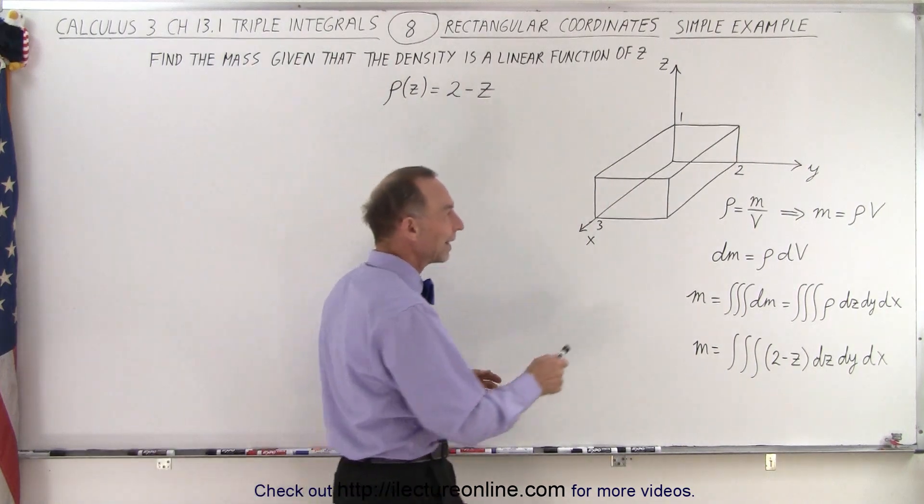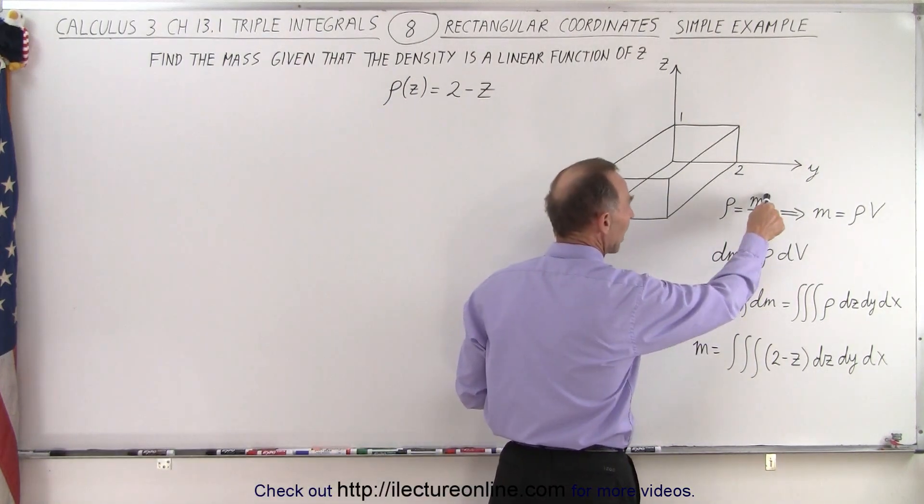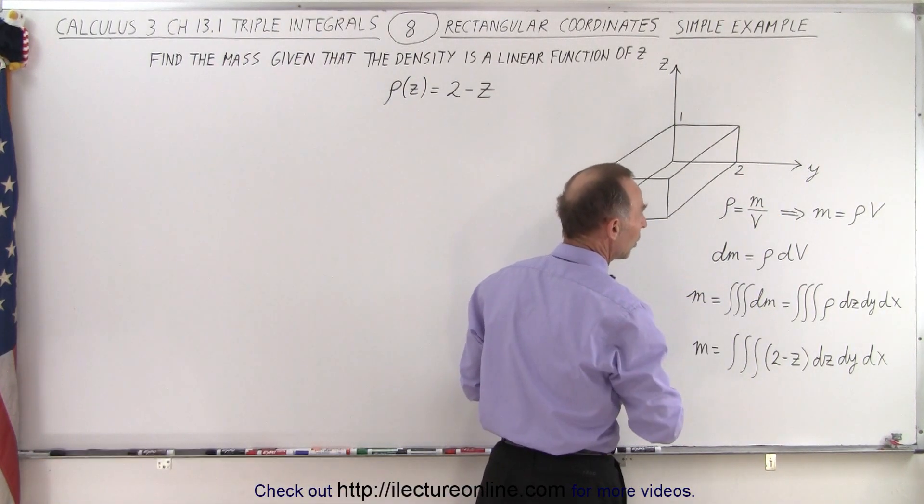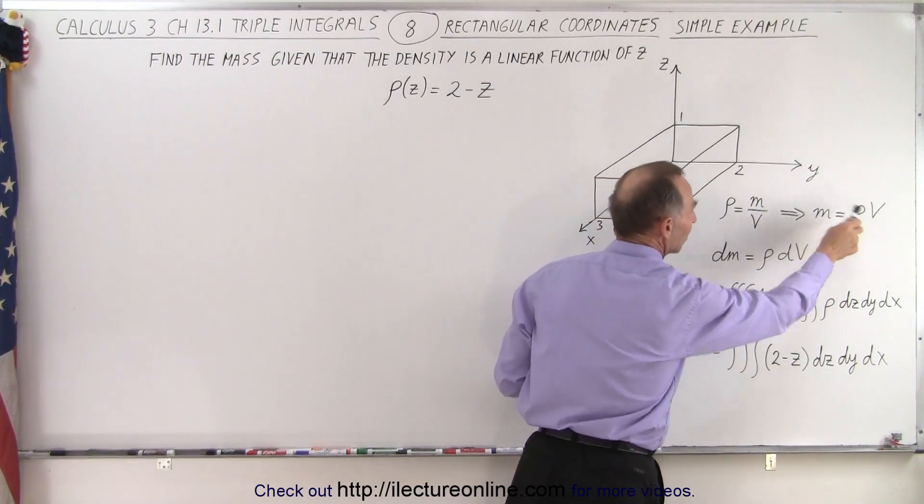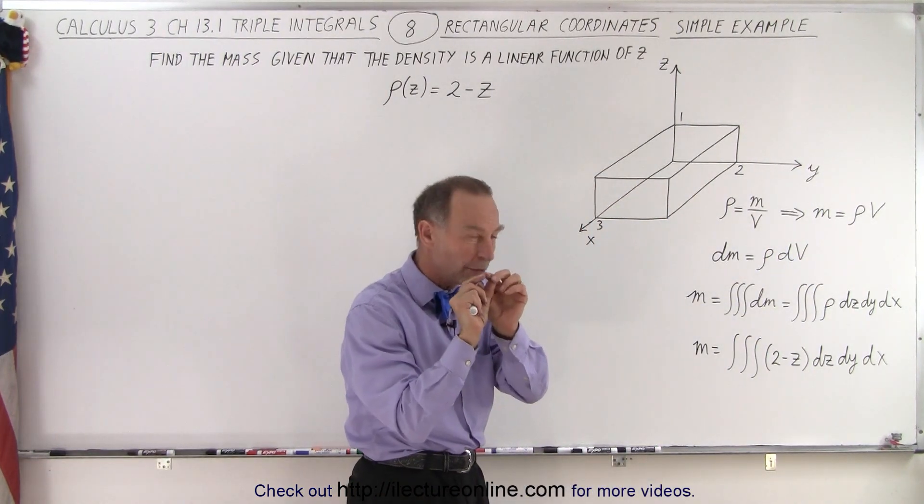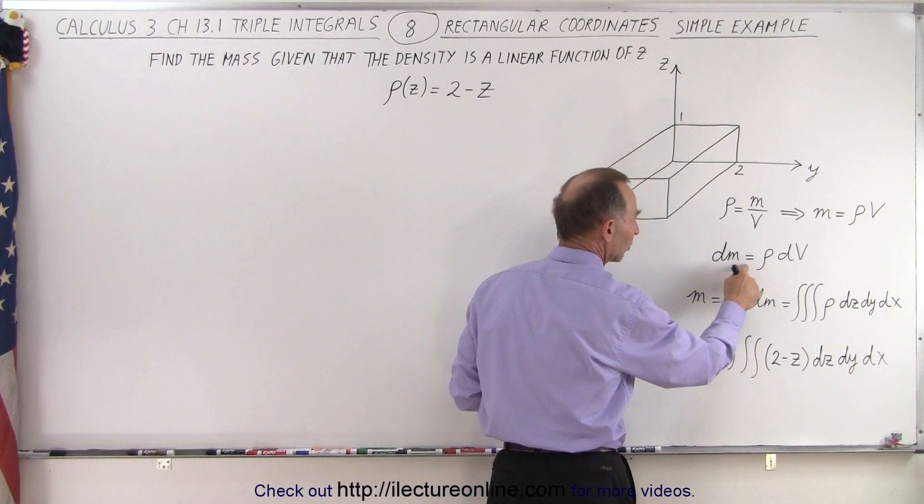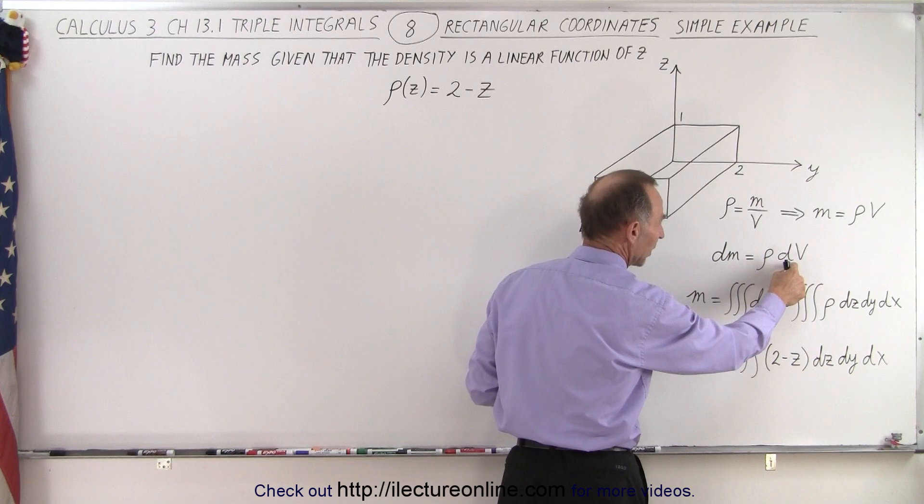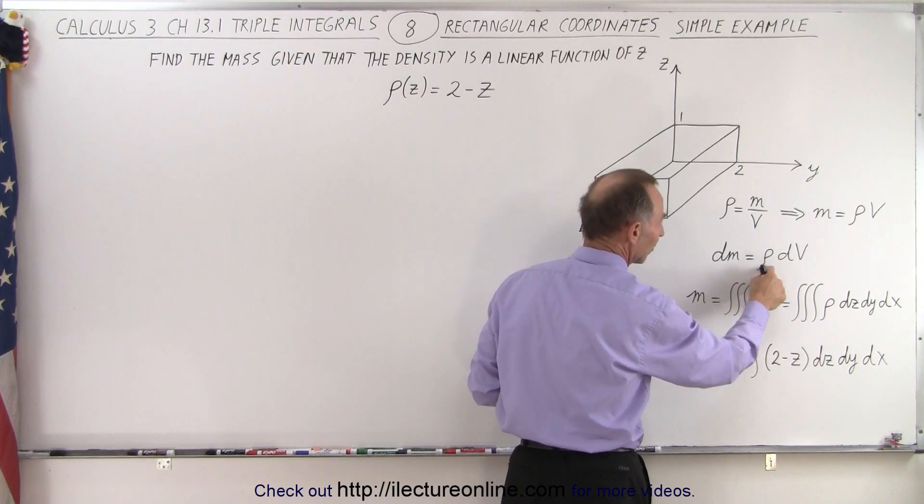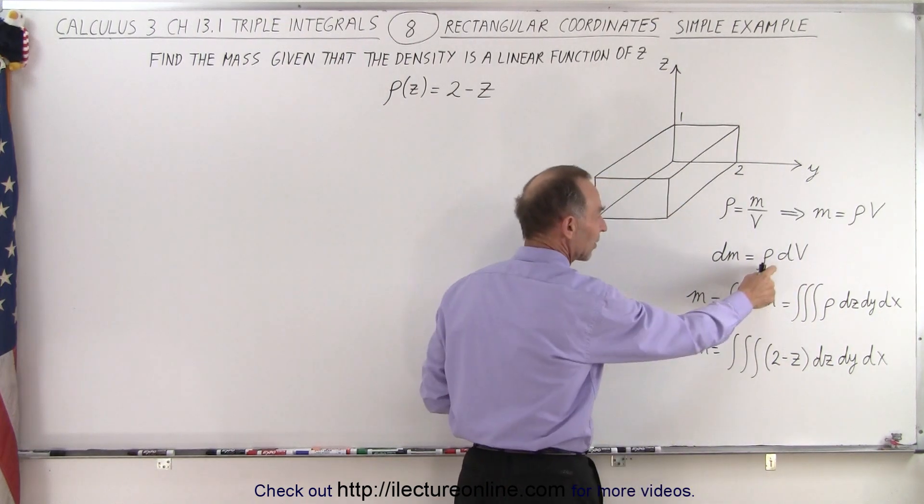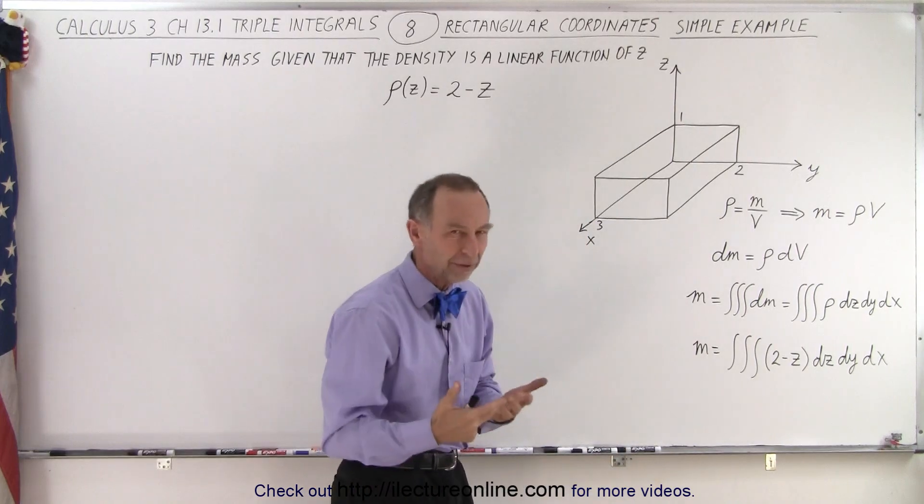We also should know that the density by definition is equal to the mass of an object divided by its volume, or the mass is equal to the density times the volume. And for any small volume element dv, the amount of mass for that is equal to the density times that small volume element. So dm is equal to the density times dv. This letter here is the Greek letter rho that represents density.